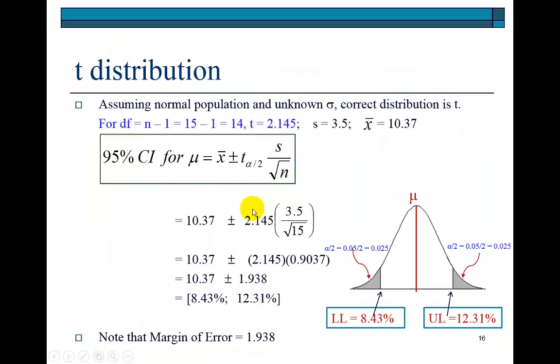That's how we obtain this number, which when multiplied by the standard error gives us a margin of error of 1.938. The lower and upper limits of the confidence interval are 8.43% and 12.31%. We conclude that we are 95% confident that the average annual rate of return on this portfolio ranges between 8.43% and 12.31%.